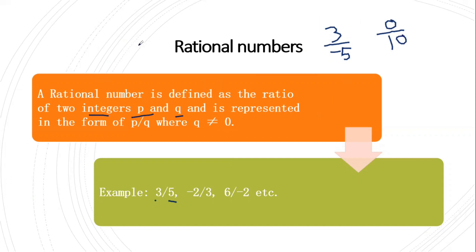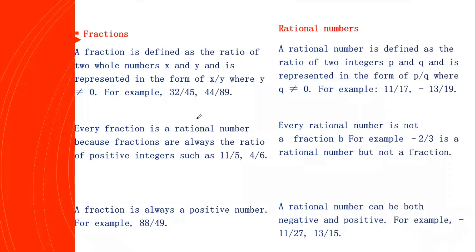Now, if you observe the difference between fractions and rational numbers, it looks almost the same, but they are not the same. If they were the same, we would not need rational numbers — we could just call rational numbers fractions. So let's see the difference. A fraction is defined as a ratio of two whole numbers — the numerator and denominator should be whole numbers. Whereas in a rational number, the numerator and denominator are integers. This is the main difference between fractions and rational numbers.